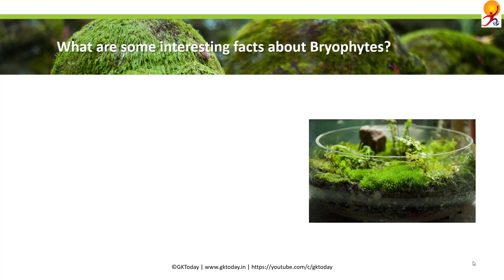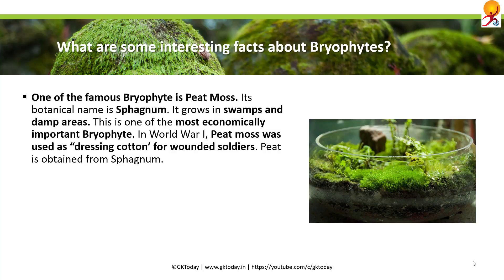What are some interesting facts about bryophytes? One of the famous bryophytes is peat moss, whose botanical name is Sphagnum. It grows in swamps and damp areas and is one of the most economically important bryophytes. In World War I, peat moss was used as dressing cotton for wounded soldiers, and it is obtained from Sphagnum.